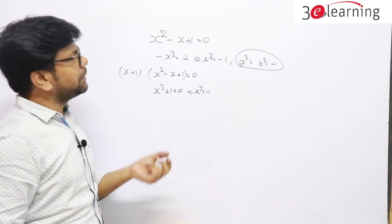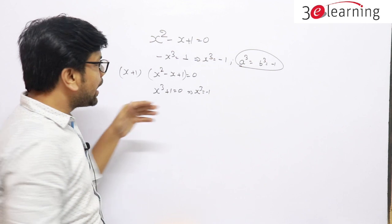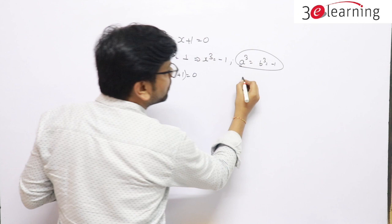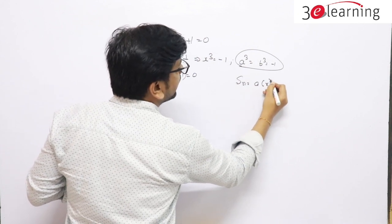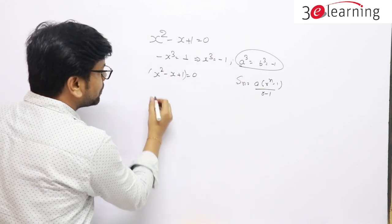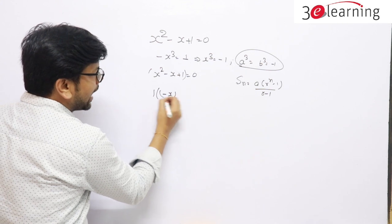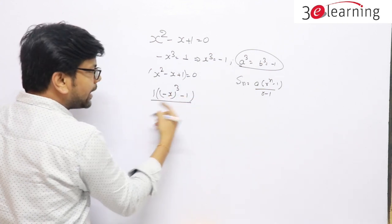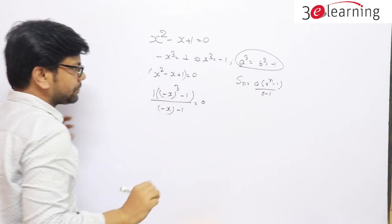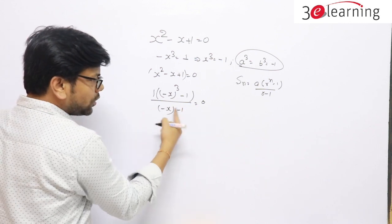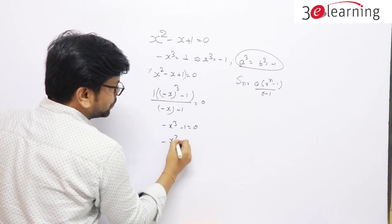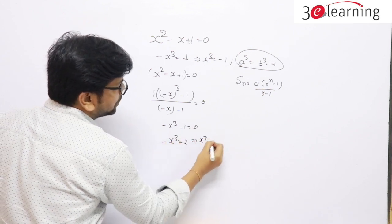You might wonder how to think of multiplying by (x+1). You can either memorize it, or use the GP formula. The GP sum formula is Sₙ = a(rⁿ - 1)/(r - 1). Taking first term a = 1, common ratio r = -x, and 3 terms: (-x)³ - 1 divided by (-x - 1) = 0. From here, -x³ - 1 = 0, so -x³ = 1, and x³ = -1.